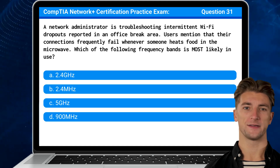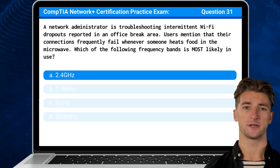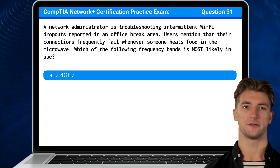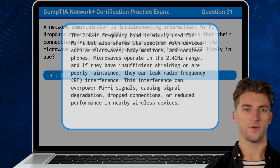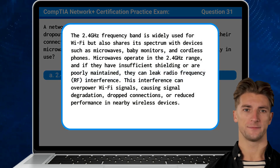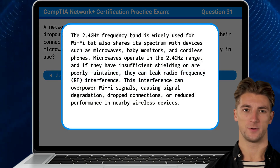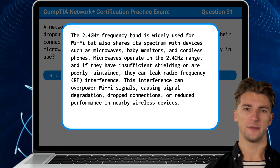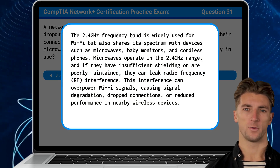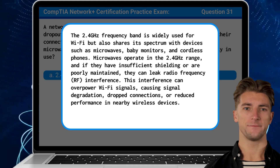The answer is A: 2.4 GHz. The 2.4 GHz frequency band is widely used for Wi-Fi but also shares its spectrum with devices such as microwaves, baby monitors, and cordless phones.